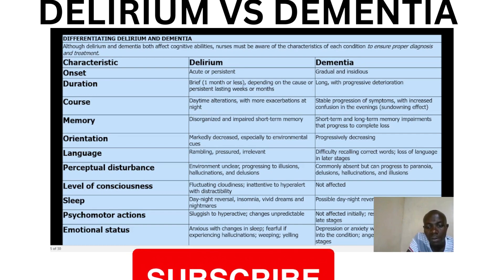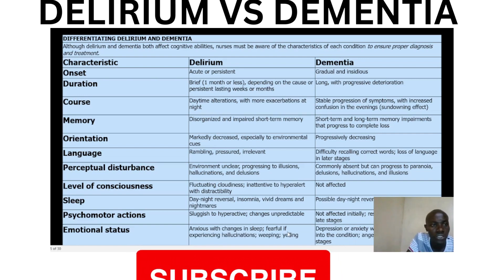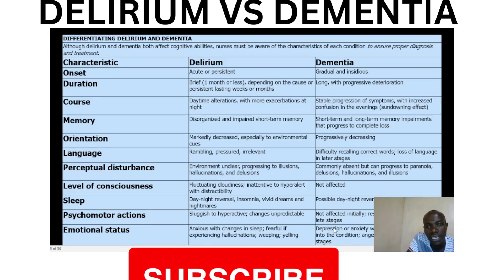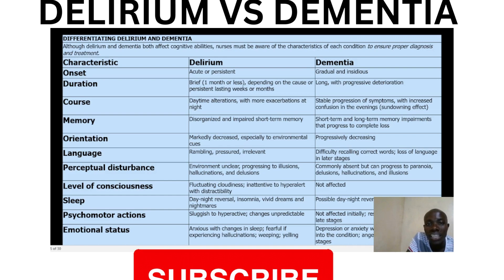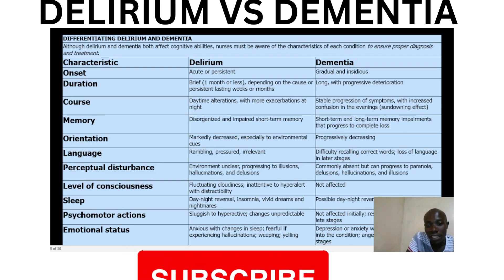These are some of the differences between the two conditions. We have tried to list them and separate them in terms of characteristics or features. The first column represents delirium and the second one represents dementia. The reason I've chosen to start with delirium is because delirium is acute, so we start with acute followed by the chronic.